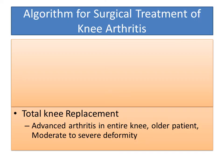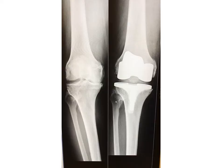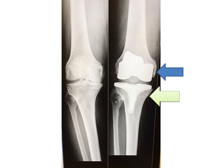Total knee replacement is indicated for advanced arthritis in the entire knee for the older patient who has moderate to severe deformity. This is a 60-year-old patient with tricompartmental arthritis of the knee with a severe varus deformity. This is the femoral component, the tibial component, and the plastic in between. In this patient, a partial knee replacement would not have been satisfactory in correcting the overall deformity and the arthritis was not just in one compartment. For that reason, a total knee replacement enabled correction of the deformity and comprehensive treatment of the arthritis.